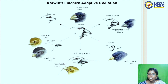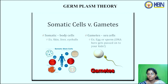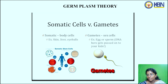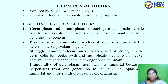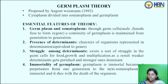The Germplasm Theory: cytoplasm is divided into two types — somatoplasm, which consists of body cells such as skin, liver, and eyeballs; and germplasm, which consists of sex cells such as eggs in females and sperm in males. DNA is passed onto the next offspring through germplasm. This theory was proposed by August Weismann (1820–1892). Through germ cells, male or female fuse to form a zygote, and continuity of germplasm is maintained from generation to generation.